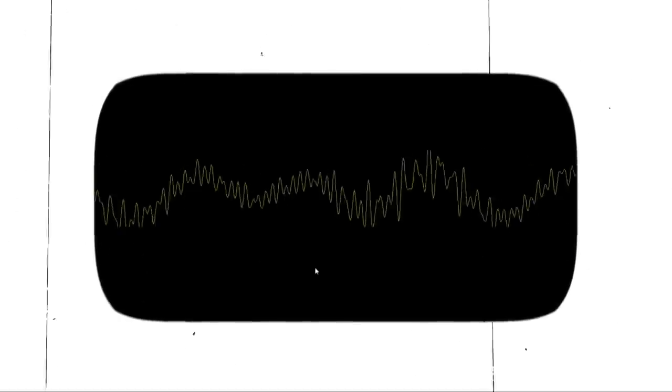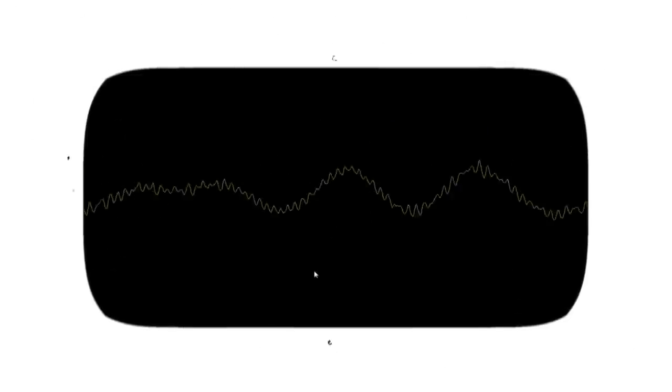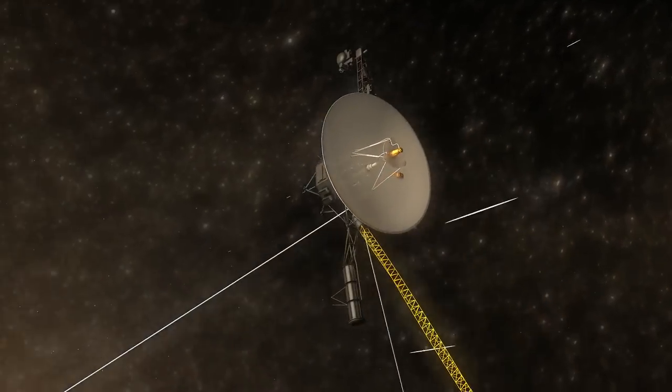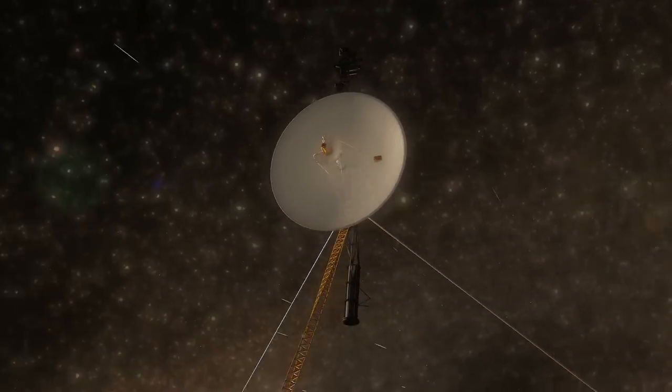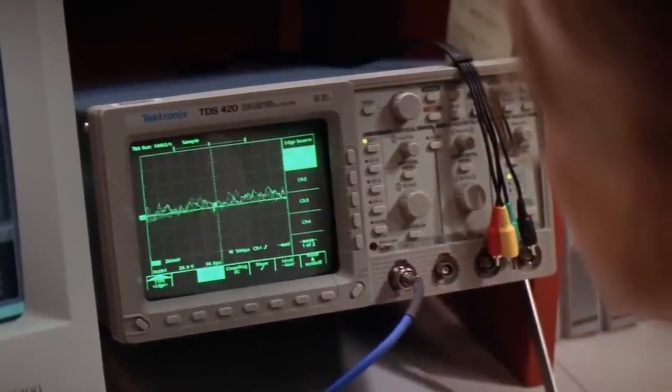The WOW signal was a narrowband signal that was detected at Big Ear observatory in 1977. The SETI project at Big Ear lasted for 24 years, making it the longest-running continuous SETI search in history. But the investigators never picked up anything else quite like the WOW signal.